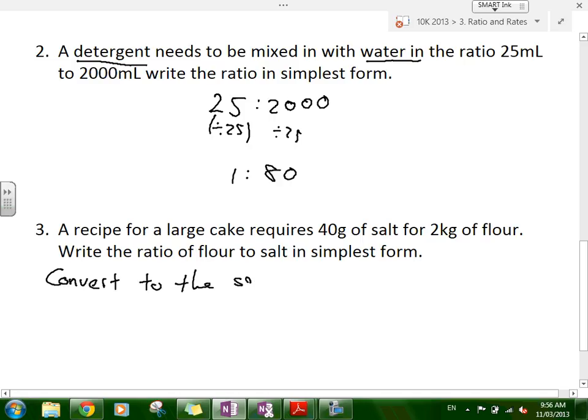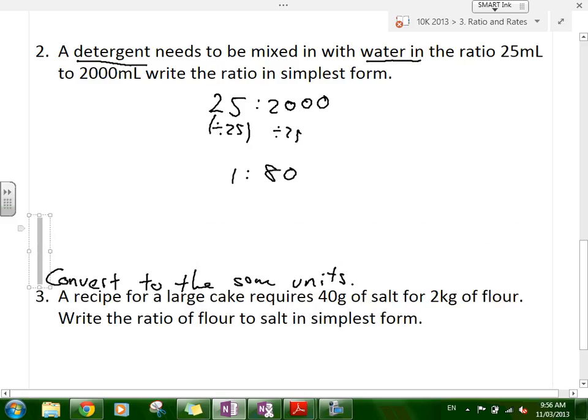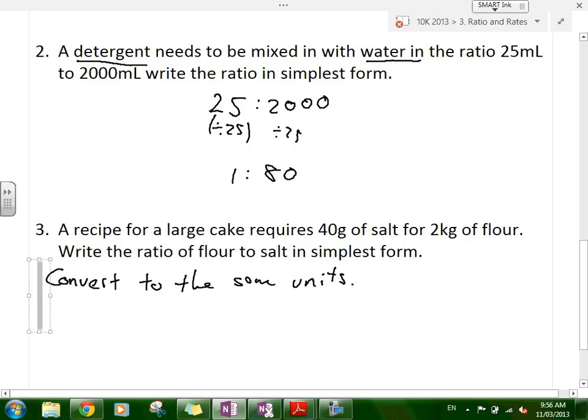That's a really important thing. Because otherwise, your ratio is going to be all wrong. If you did 40 to 2, that would simplify to 20 to 1. And you'd be saying that you need 20 parts salt for every one part of flour. Clearly, that's not correct. So, we need to make sure that we're changing the units. So, if we change the units, what is 2 kilograms of flour in grams? What's 2 kilograms of flour in grams? 2,000.